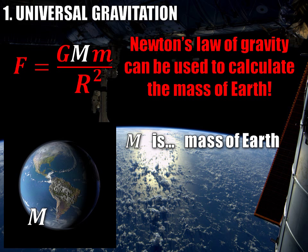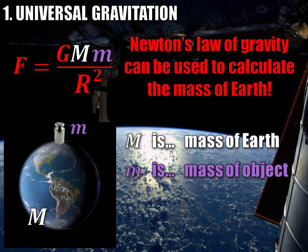We can definitely use this to find the mass of the Earth. It just means that if that's going to be our unknown, then everything else must be known. The next variable is the little m, or the second mass. We have to pick a mass — so let's pick this standard 1 kg mass. The little m, or the second mass, is simply the mass of this object sitting at the surface of the Earth, held in our hands.